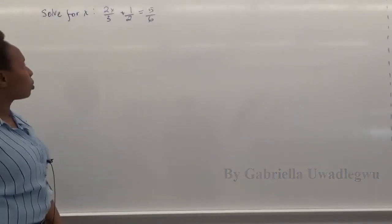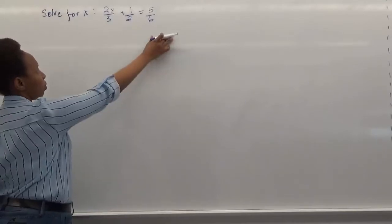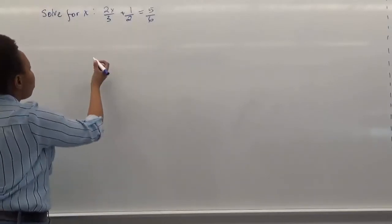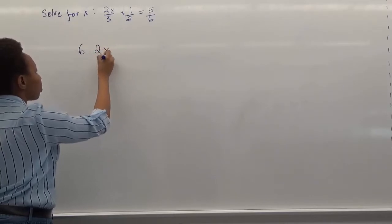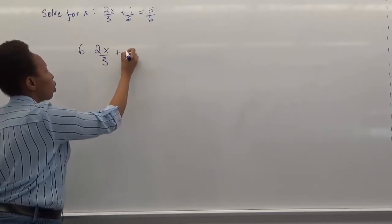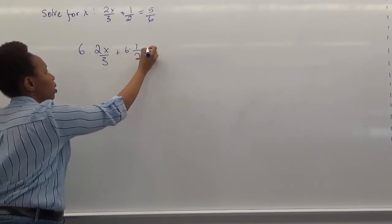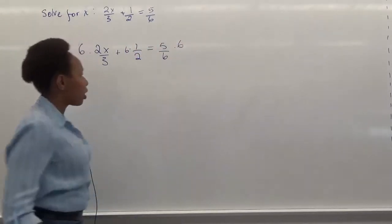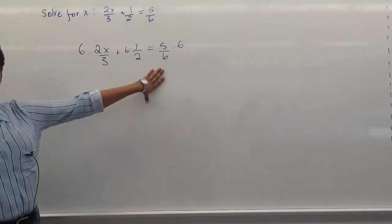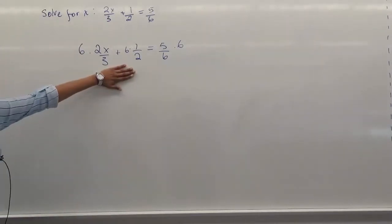So what we can simply do here is multiply both sides of the equation by 6. So what we'll have here is 6 times 2x over 3 plus 6 times 1 over 2 equals 5 over 6 times 6. So that this way, we get rid of 6 in the denominator and simplify these two fractions.